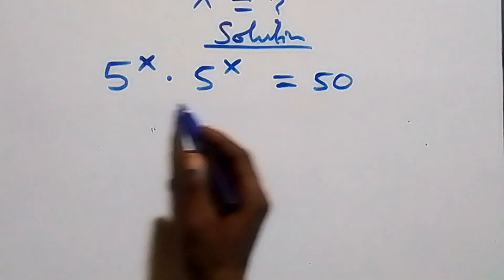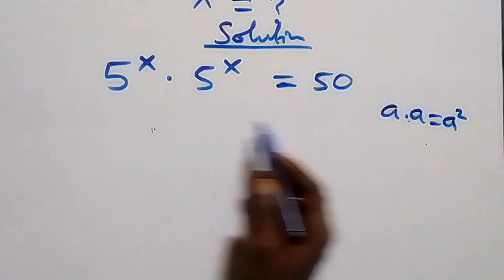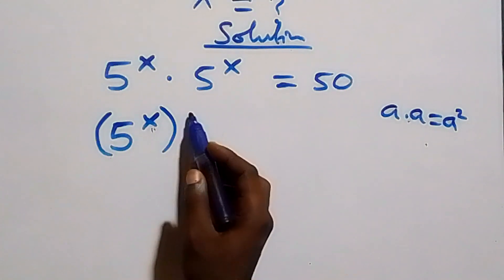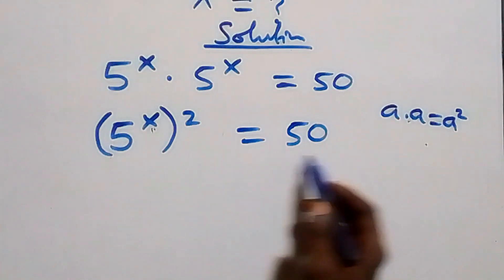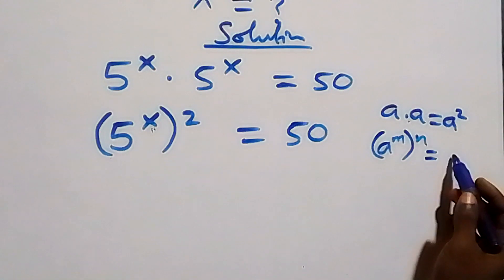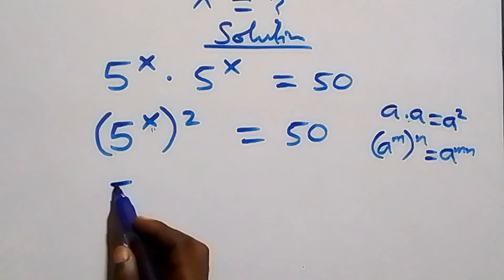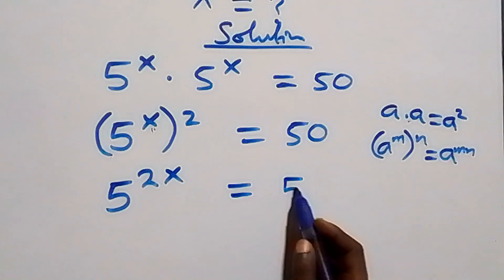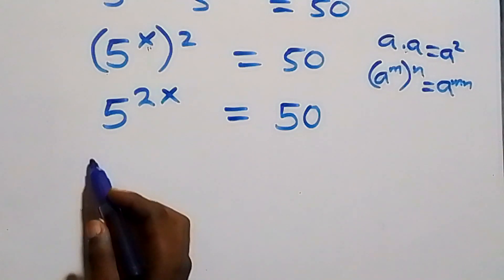This follows from when we have a times a, which we can rewrite as a squared. So we can write this again as 5 raised to power x, then all squared, equals to 50. From the law of indices, a raised to power m raised to power n is the same as a raised to power mn — the powers multiply — and we have 5 raised to power 2x equals to 50.